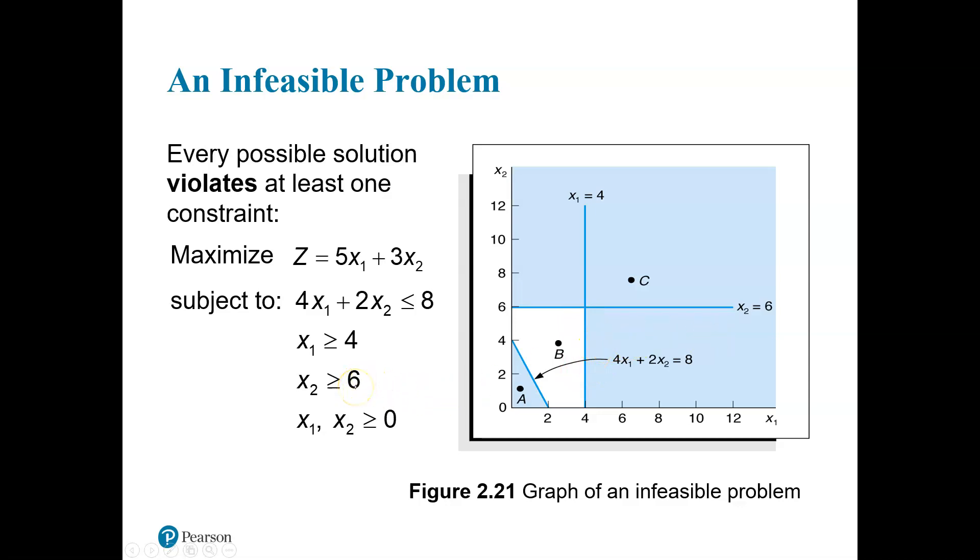The third constraint, x2 is greater than 6. Basically showing x2 has to be at least 6, somewhere up here. Point C is feasible for the second and third constraint. But point C is not possible or feasible for the first constraint. Point B is not possible for any constraint. In this question here, there's no possible solution. We've either entered the constraints wrong, or we're trying to do the impossible.